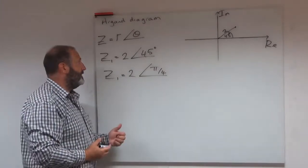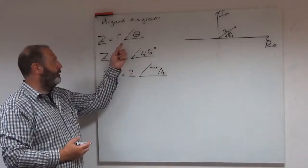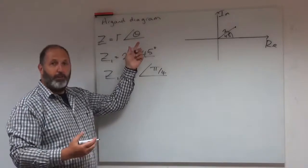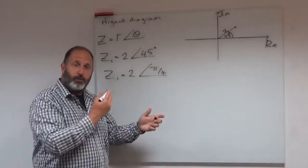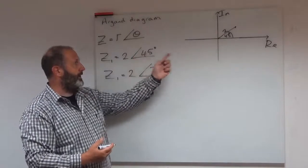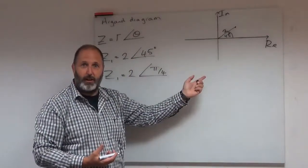How else might this be written? Well, if it's in polar form, we need to know r and theta. We need to know the angle that we've gone through and we need to know, if you like, how far away it is from the origin. So the length of the line.